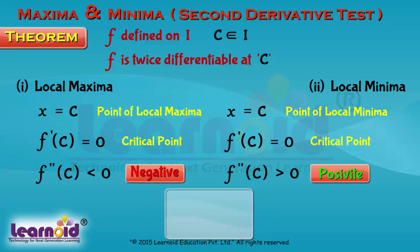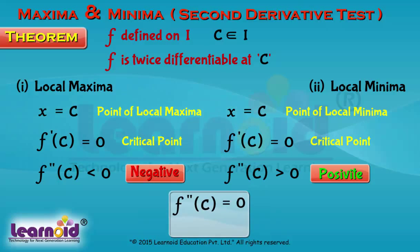What if f''(c) equals 0? The second derivative test fails if both the first and second derivatives at c are equal to 0.